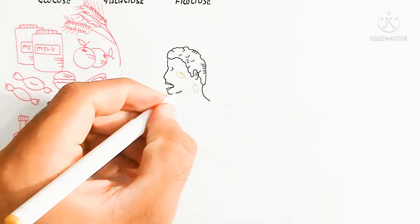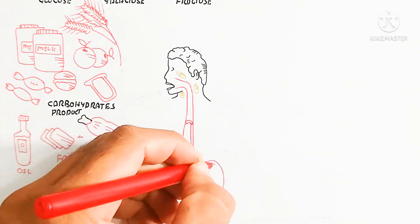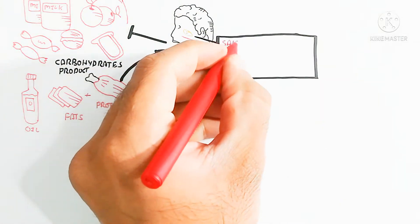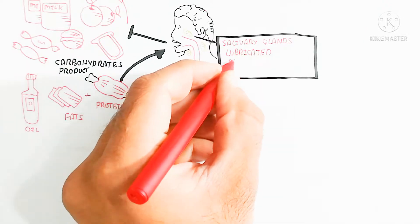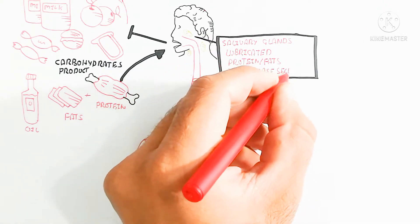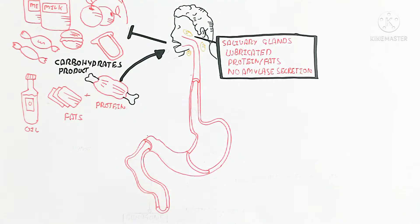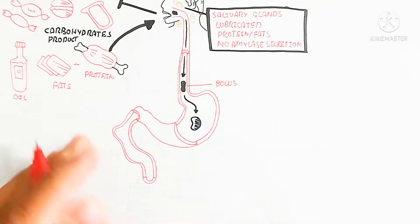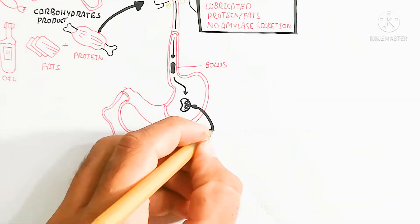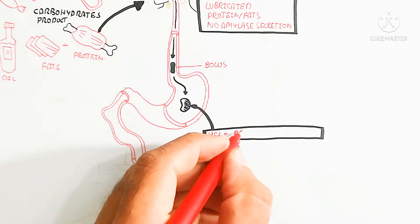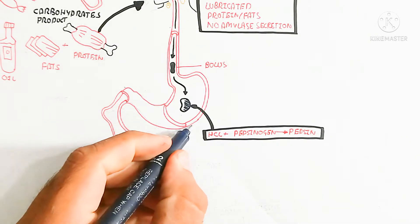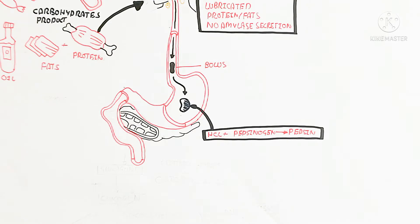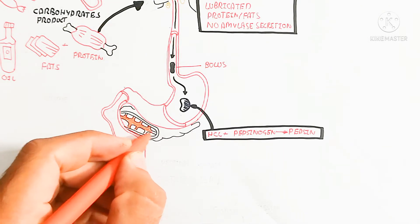When we restrict carbohydrates and eat a high protein and low fat diet, carbohydrates will not be metabolized or absorbed since they are not present. The salivary glands lubricate protein and fat but do not produce amylase secretion. The bolus goes into the stomach, where hydrochloric acid and pepsinogen are activated in the form of pepsin for protein digestion. The digested protein then goes into the duodenum as chyme.